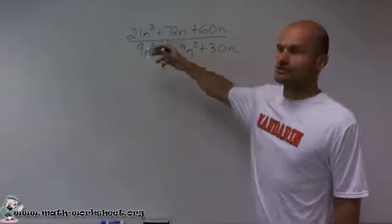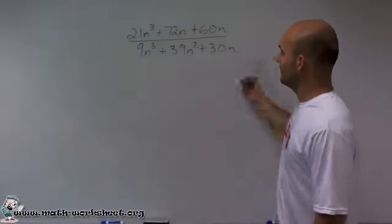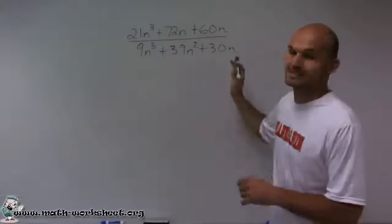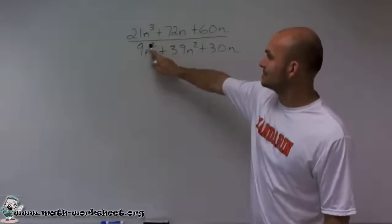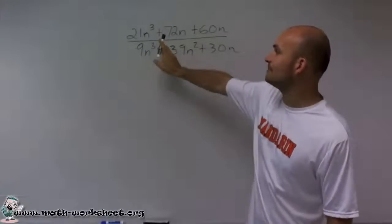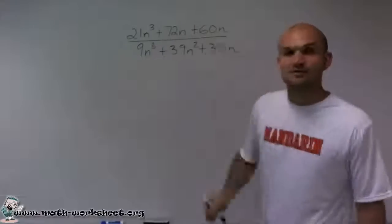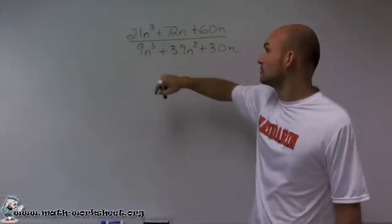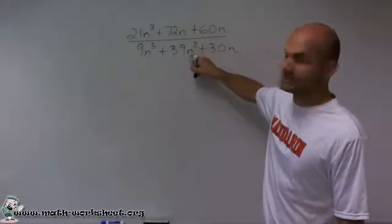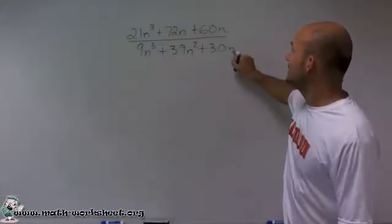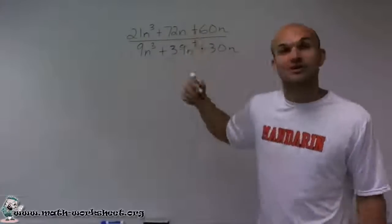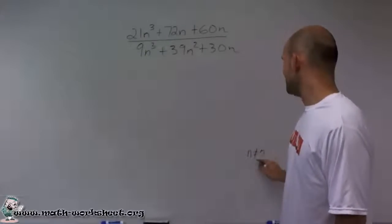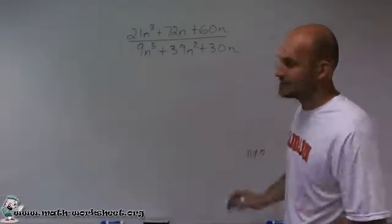So looking up here, without trying to think of any kind of number, what number would make this 0? Well, there is one number that's pretty obvious that's going to make my denominator 0. These are all multiplied by n by itself, so it's always going to get larger. However, what if I chose the number 0? Well, 0 cubed is 0 times 9, which is 0. n squared is 0, or 0 squared is 0 times 39 is 0. And 0 times 30 is 0. 0 plus 0 plus 0 would be 0. So therefore, in my answer, I'm just going to write to the side, n cannot equal 0.